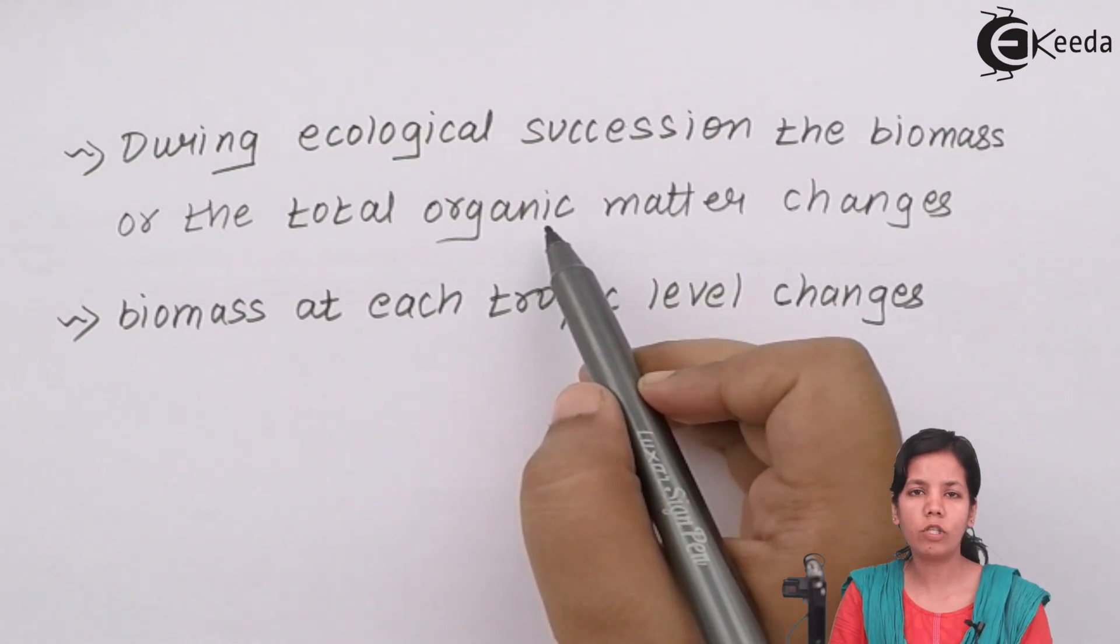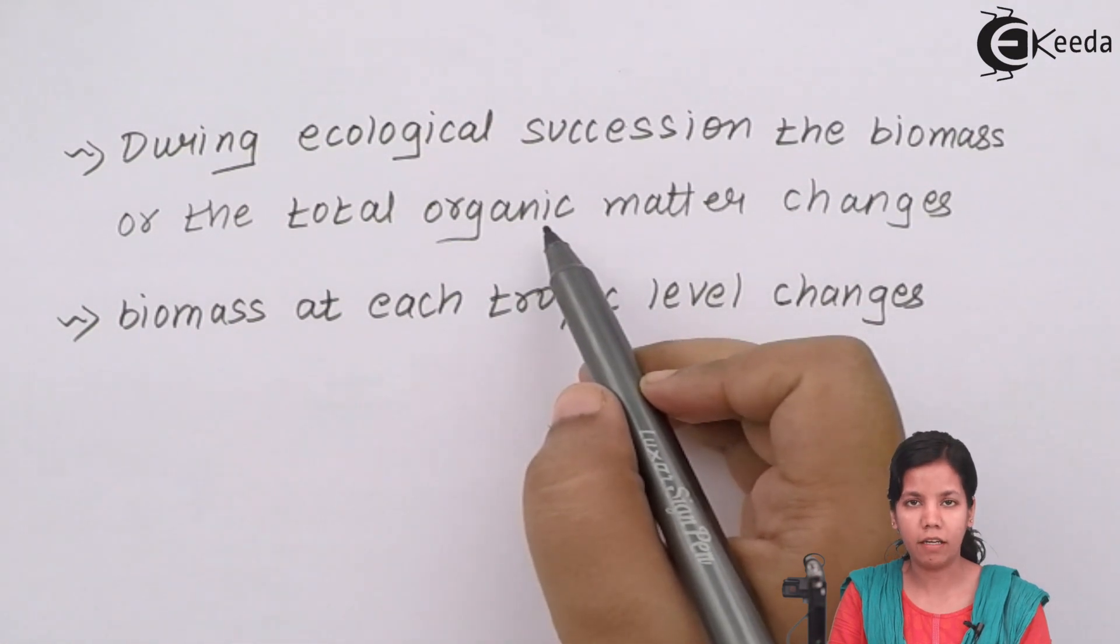For example, if there are no trees present on a land, obviously the amount of organic matter would be very less. In comparison to when there are a lot of trees present on a particular ground, the amount of organic matter would be very large.